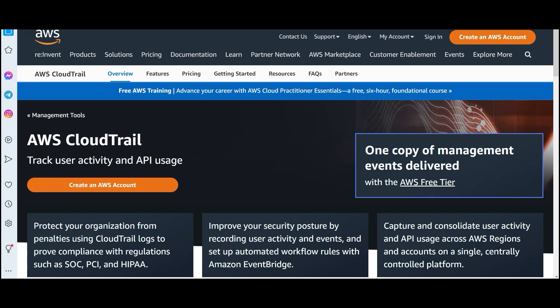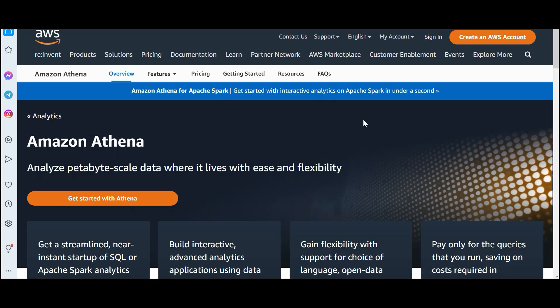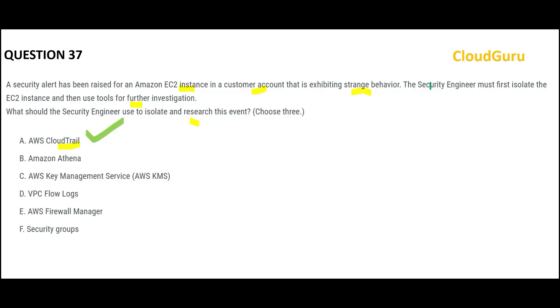CloudTrail would be my first answer — it has all user activities and API usage details. Athena is used for analytics, firing queries on petabyte-scale data on S3 — looking at Athena will tell us nothing here. KMS is used for encryption key management — it is absolutely safe. If an intruder gets into a bank, you would not immediately go check the vault; it has multiple layers of security. So we will not worry about KMS.